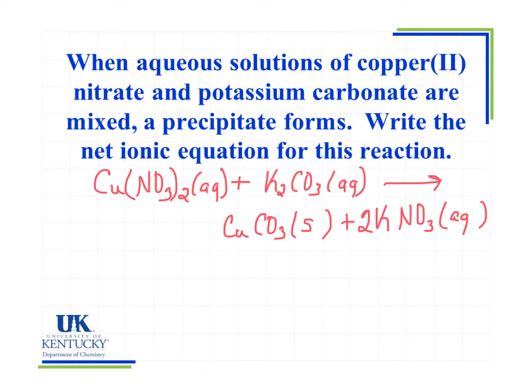But what I want to actually write is my net ionic equation. So what I have written here is a complete molecular equation. Now I'm going to write my complete ionic equation, and when I do that, I'm going to write anything that is labeled as aqueous as an ion. So I have Cu²⁺(aq) + NO₃⁻(aq) + K⁺(aq) + CO₃²⁻(aq). Because if I were to look at the solution before I combine these two solutions, I would see these ions present in solution, not units of copper nitrate or potassium carbonate, but the actual ions.